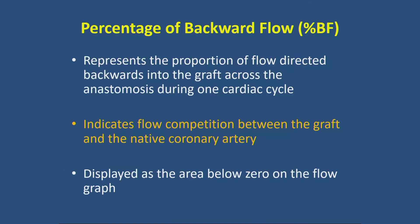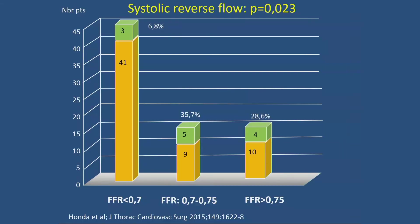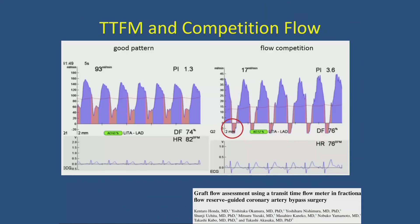The third measure is the percentage of backflow. It indicates flow competition between the graft and the native coronary artery — crucial to examine if you suspect competition flow. The graft flow dips below the baseline. Honda's data shows that with a significant lesion (FFR below 0.7), you have only 6.8% systolic reverse flow, while with FFR above 0.75, reverse flow rises to 28%. In a good flow pattern: high flow (93 ml), low PI, no reverse flow. With competition flow: lower flow, higher PI, and flow below the line.